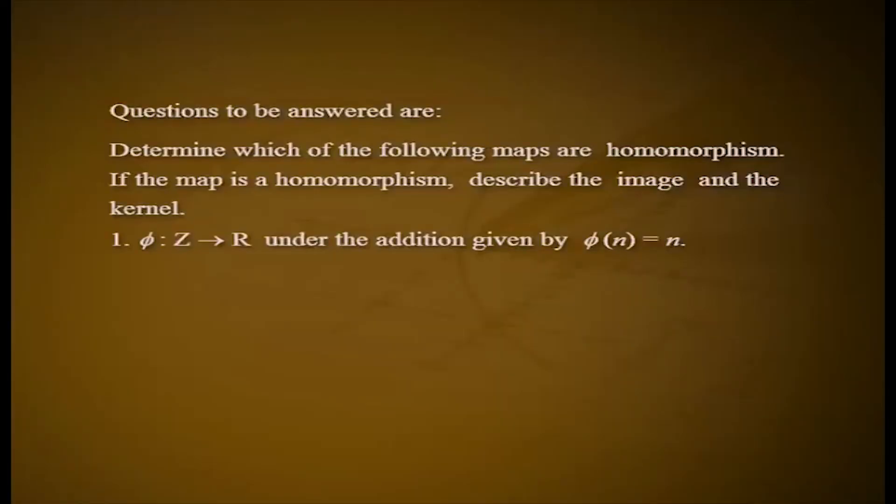Now let us have a quick look at what we have discussed in this session. We have considered homomorphisms, which are functions that relate the structure of one group G to the structure of group G dash. A brief description of kernels as subgroups associated with homomorphisms was given. A discussion on normal subgroups was made. Automorphism, which is an isomorphism from a group onto itself, was also introduced. Now try to answer the following questions. Determine which of the following maps are homomorphisms. If the map is a homomorphism, describe the image and the kernel.